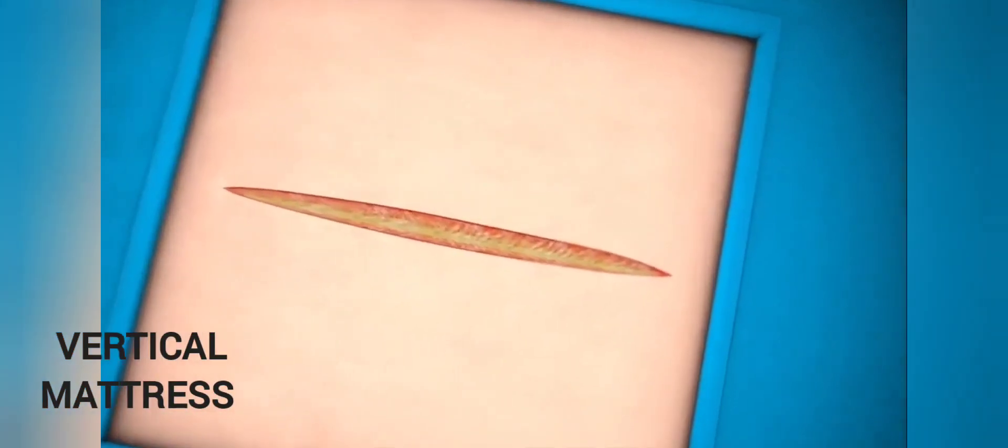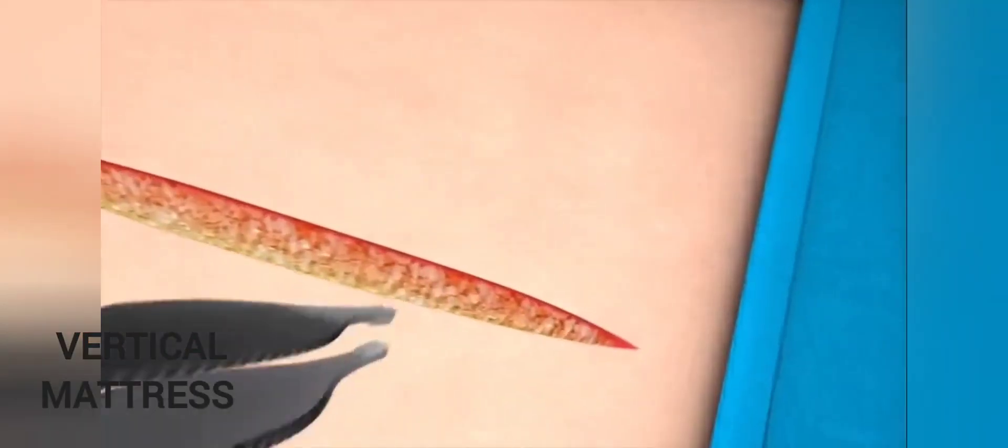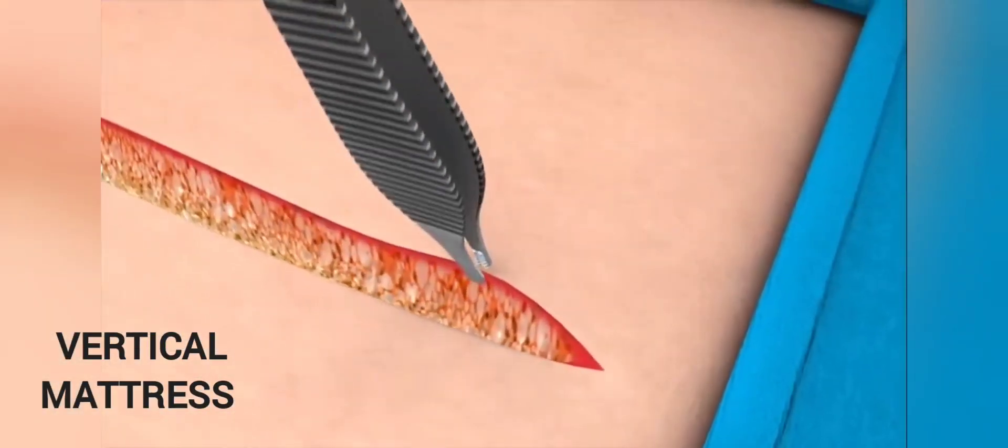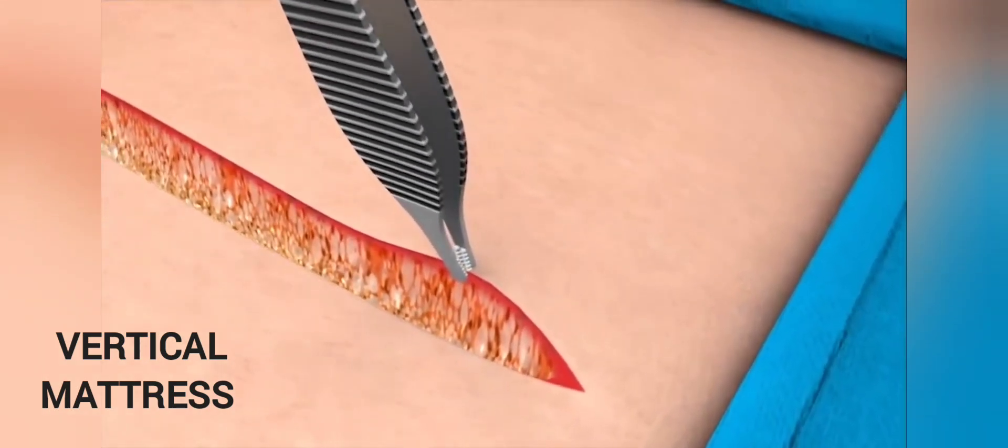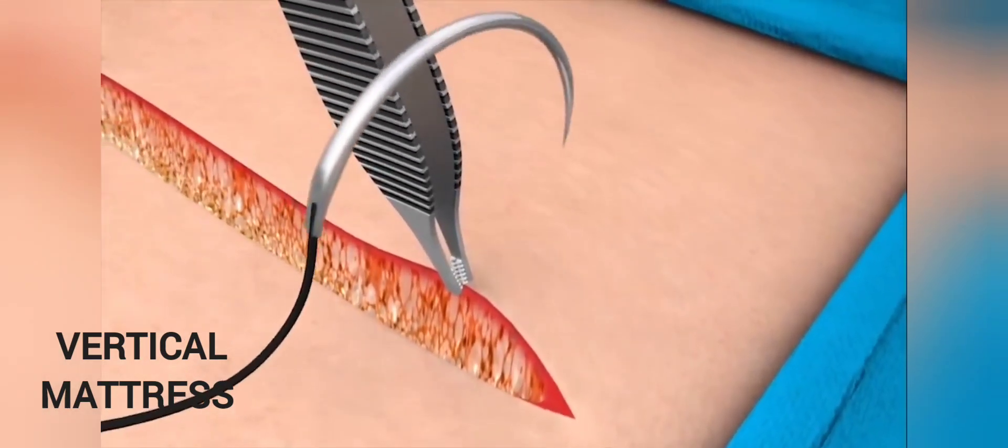For small wounds, start suturing at one end of the incision. Use the toothed forceps to very gently lift the skin edges and hold the skin when inserting the needle.